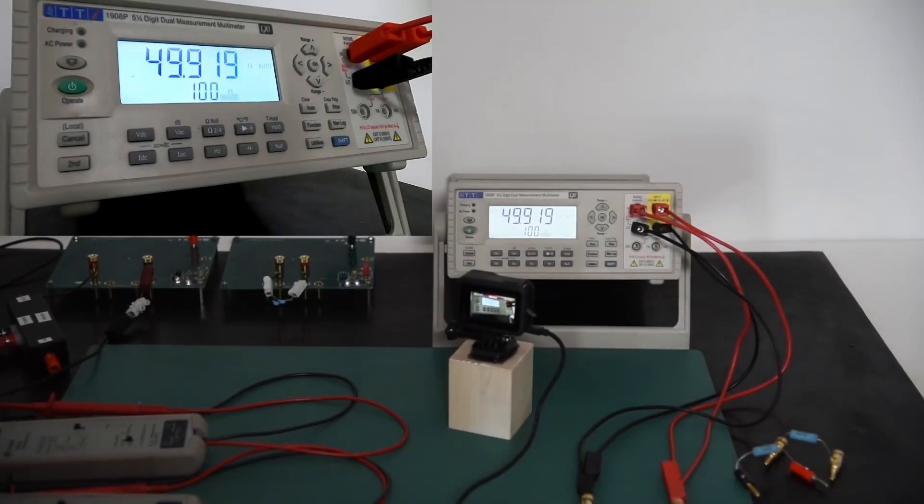Our first measurements after a warming period of 20 minutes for the DMM is very important. It needs to settle down temperatures, with oscilloscope is exactly the same. We measure 49.919 ohm. That is a very good value, about 0.1% in the range we are looking for.